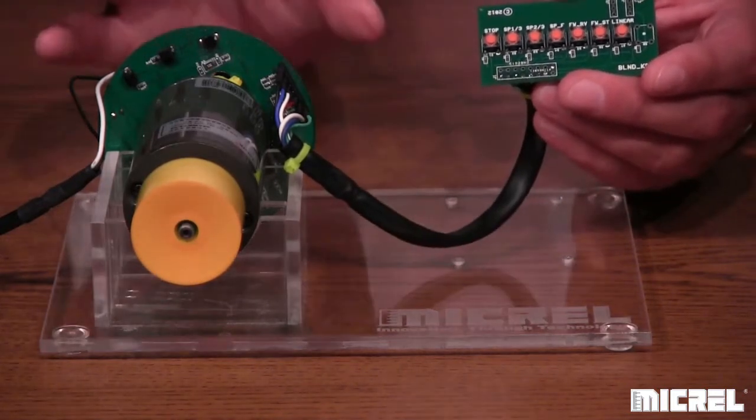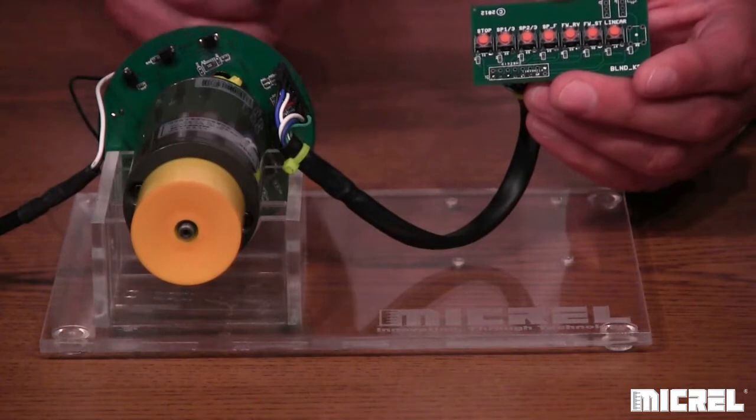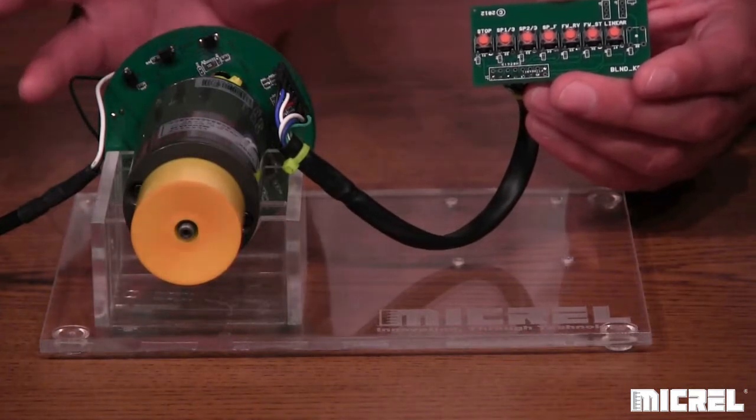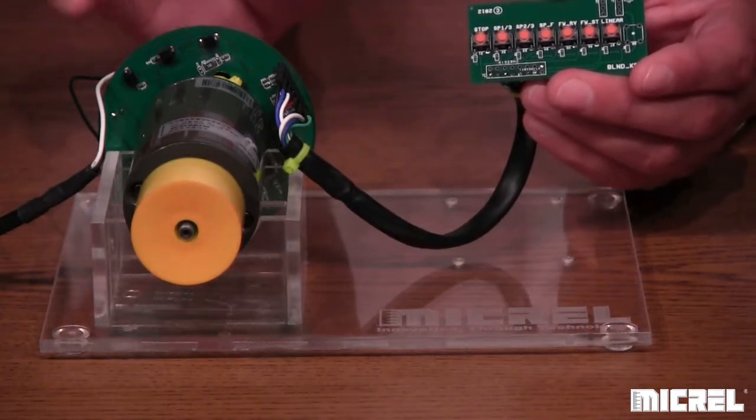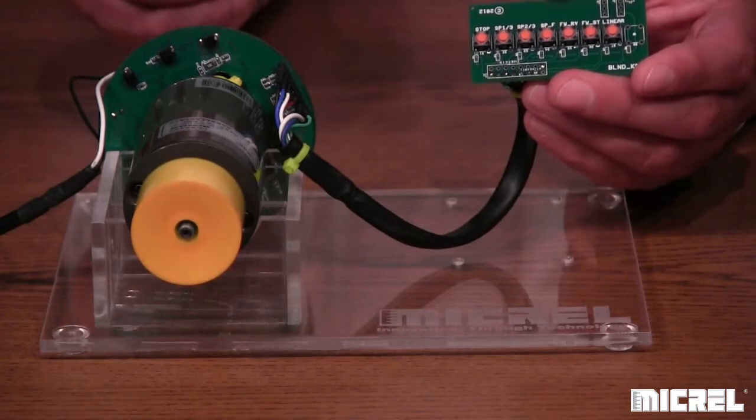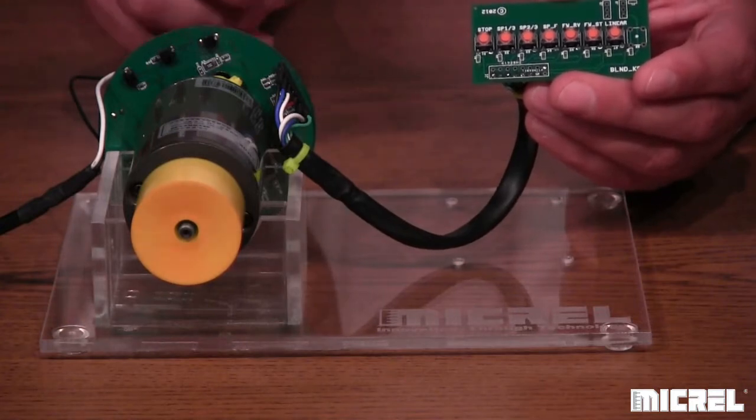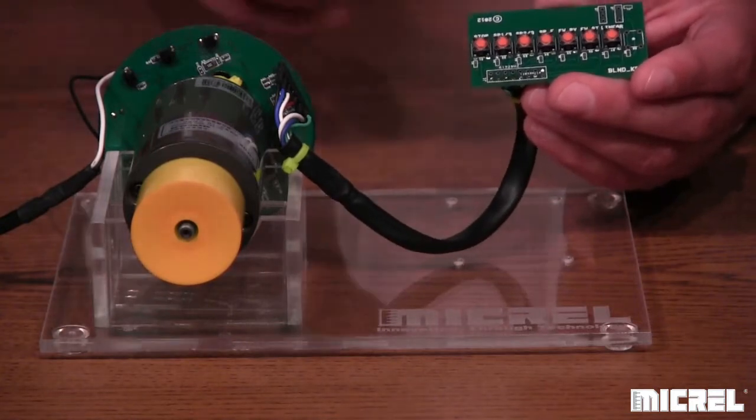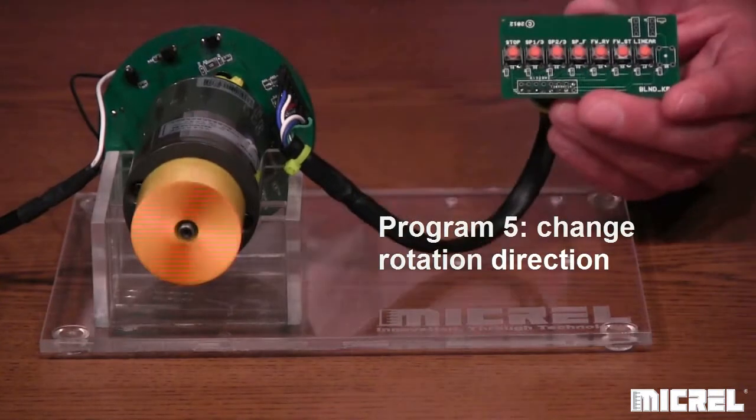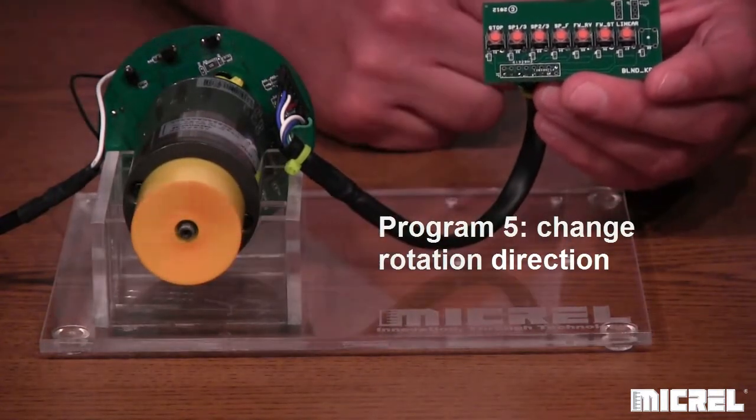So now, this is a Brushless DC motor that actually doesn't have any sensors. We're actually using back EMF, so we can calculate the rotor position. And what that allows us to do, since this is a Brushless DC, we can allow us to change rotation pretty easily and do it very smoothly compared to brush motors.